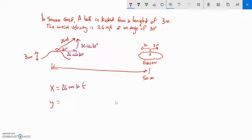In the upward direction, we have that component times t. That's our initial upward component. We also know it started at a height of three meters.